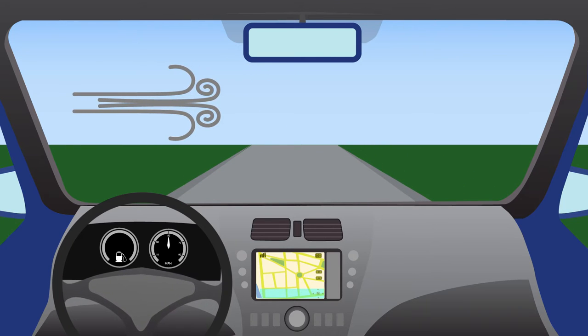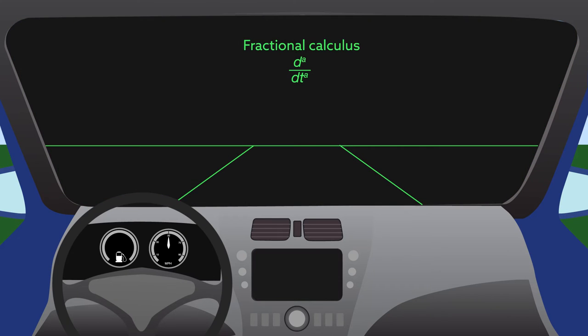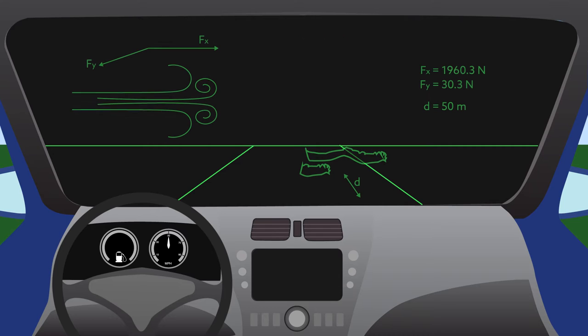A team of automation experts may have found a way. Using a branch of mathematics called fractional calculus, the researchers created tools called disturbance observers that make on-the-fly calculations to put a disturbed system back on track.